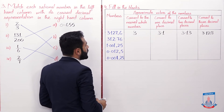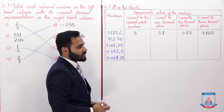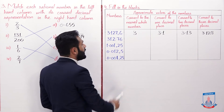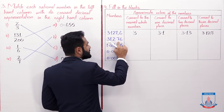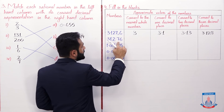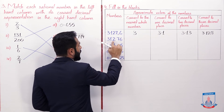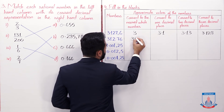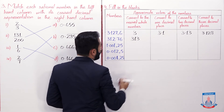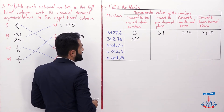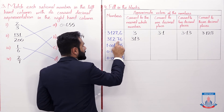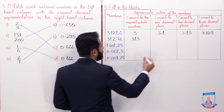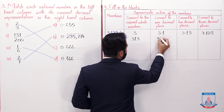The next number is 312.76. Nearest whole number: the first digit after the decimal is 7, which is greater than 5, so round up — it becomes 313. For one decimal place, the next digit is greater than 5, so it becomes 312.8.